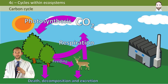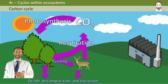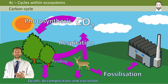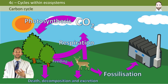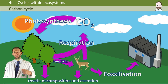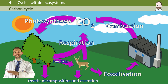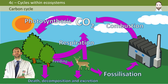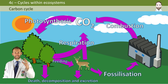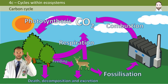Some of those organisms don't get decomposed but get fossilized instead, and they can form things like coal and oil. Those can then be combusted in a factory, and that carbon — which has been trapped there for thousands of years sometimes — gets returned back to the atmosphere in the form of CO2, and then it may go back into the cycle again, back into a plant, back into animals, and so on.